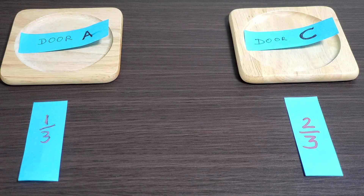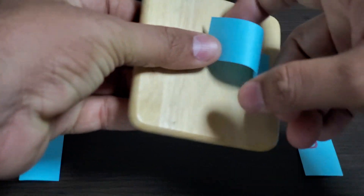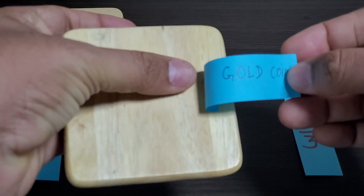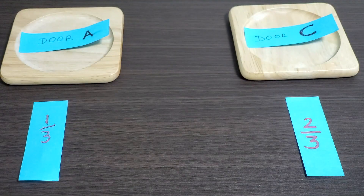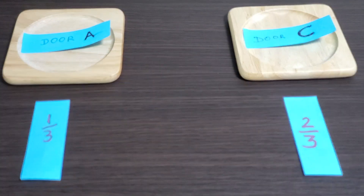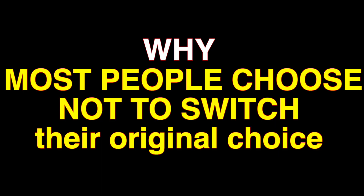Now let's see what's behind door C — yes, gold coin! By deciding to switch after knowing that door B has no gold coin behind it, it's actually a much better idea to change. In this case you won the gold coin — and that's the basic explanation of the Monty Hall challenge.